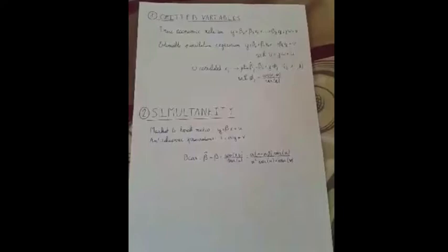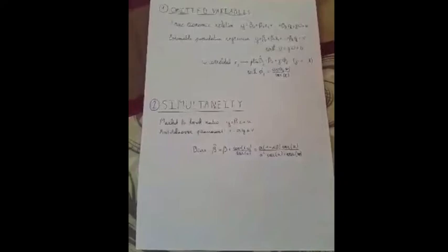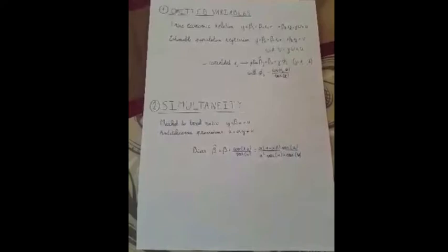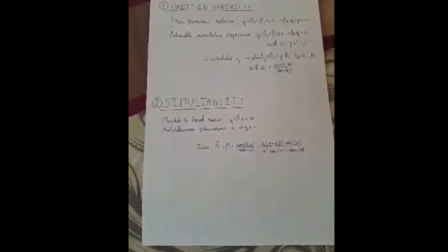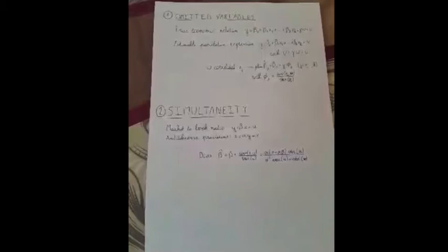The omitted variable, omega, could be correlated with one or more explanatory variables. If not, OLS will estimate consistent parameters. If omega is correlated to an explanatory variable xj, then the probability limit for the estimate of beta hat j is given by the third equation. The bias term omega phi j is equal to the product of the effect of the omitted variable on the dependent variable and the effect of the omitted variable on the included variable. In this case, OLS is inconsistent and the direction of the bias can be predicted.